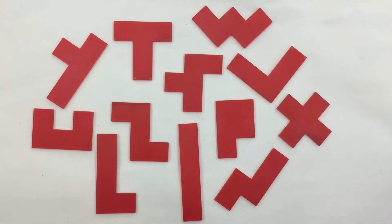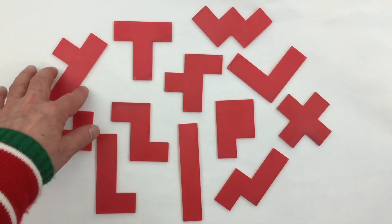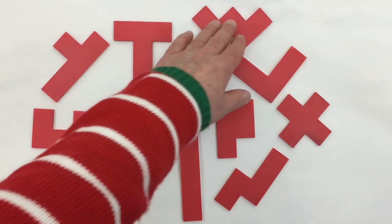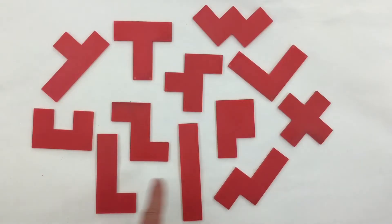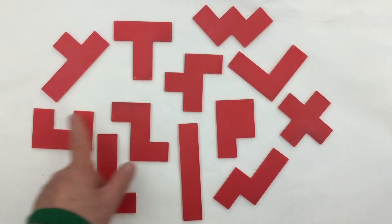A pentomino has a name for each individual shape, and they're usually named after letters. Some are more obvious than others: Y, T, W, V, X, N, L, I, Z, U.